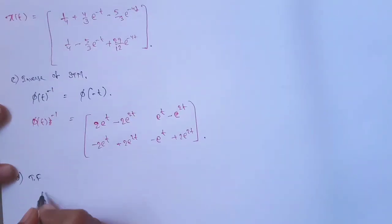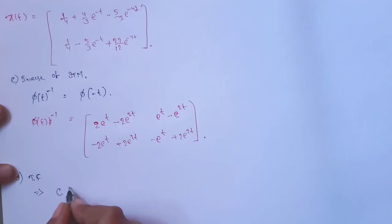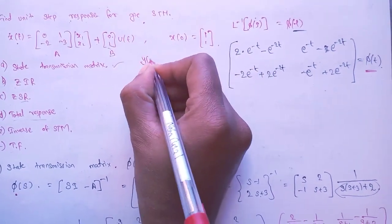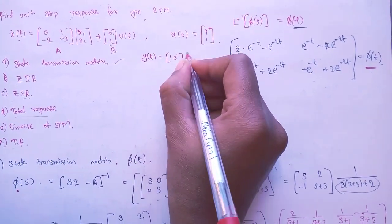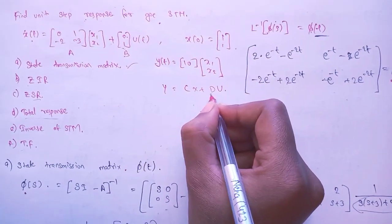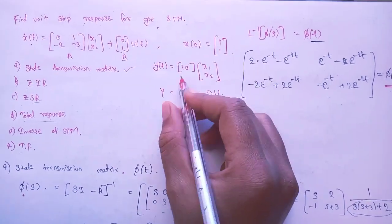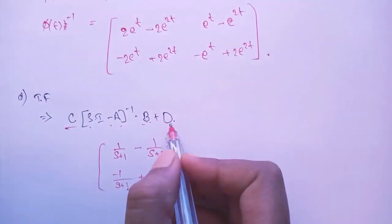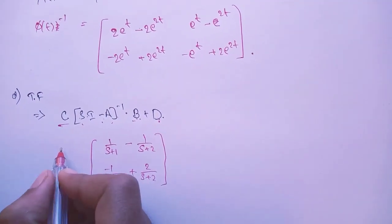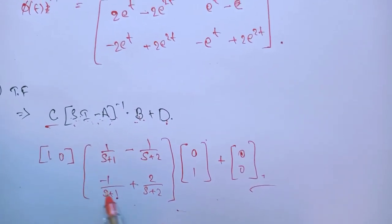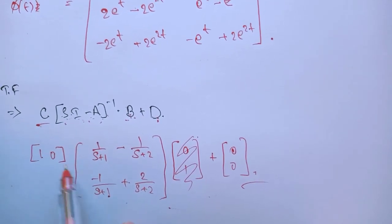The final part is to calculate the transfer function using the formula: C(sI − A)^(−1)B + D. The question also specifies y(t) = [1, 0][x1, x2]^T, meaning y = Cx + Du where D is most probably zero. So the C matrix is [1, 0]. We already have (sI − A)^(−1) from before, so we just need to multiply C, (sI − A)^(−1), and B.